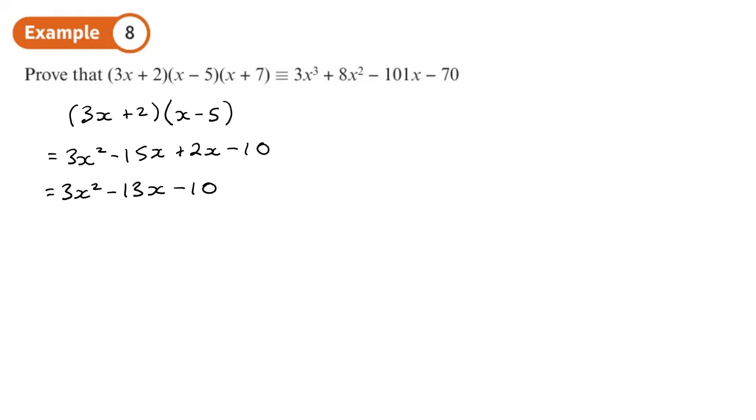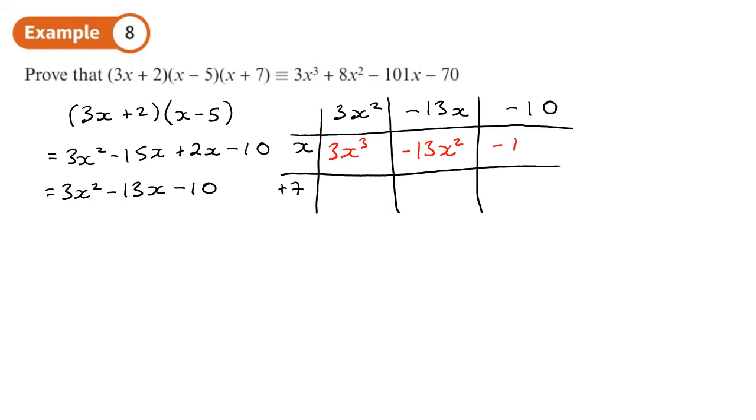Now I'm going to multiply this by the third bracket. So 3x squared minus 13x minus 10, I'm going to use a grid to do this with x plus 7. Laying it out in a grid, I'll have 3x cubed minus 13x squared minus 10x, then 21x squared, and 13 times 7 is 91.